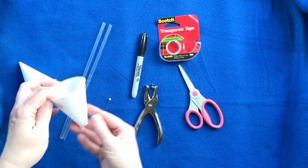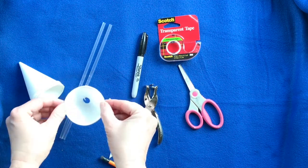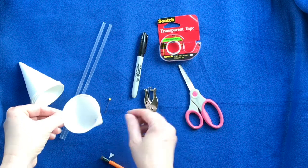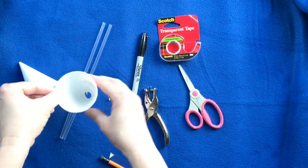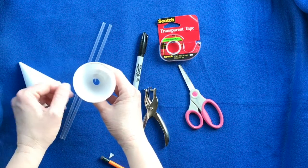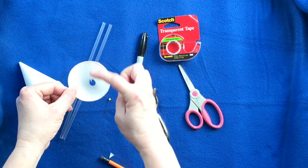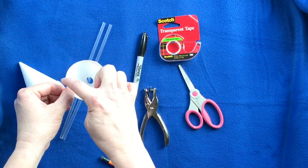So with this cup that you've punched a hole at the bottom, you're going to end up punching four holes that are directly across from each other. So if you imagine that this is like a clock, you're going to want a hole punched at 12 o'clock, 6 o'clock, 3 o'clock, and 9 o'clock.